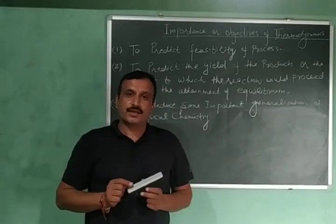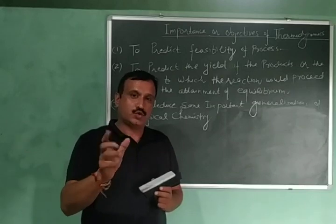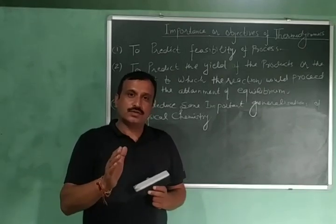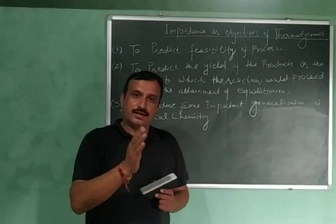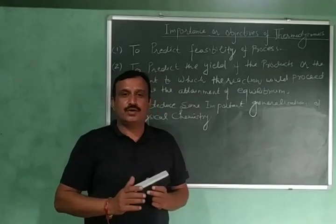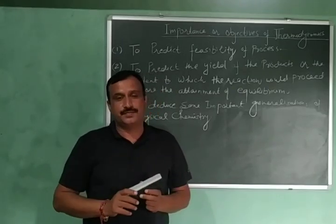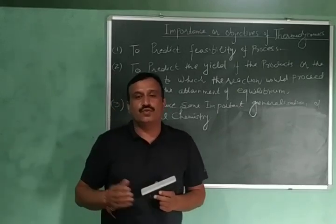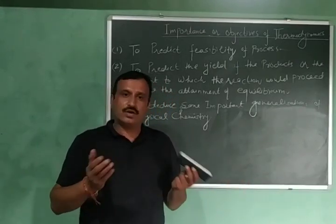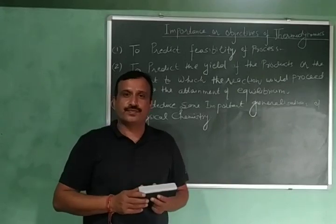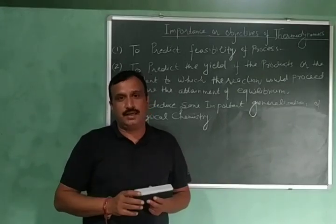The spontaneous process is of two types. The first type is processes which take place on their own, without the supply of any energy or without the help of any external agency. For example, water flows down the hill — water always flows downwards. This is a spontaneous process and doesn't require any help.